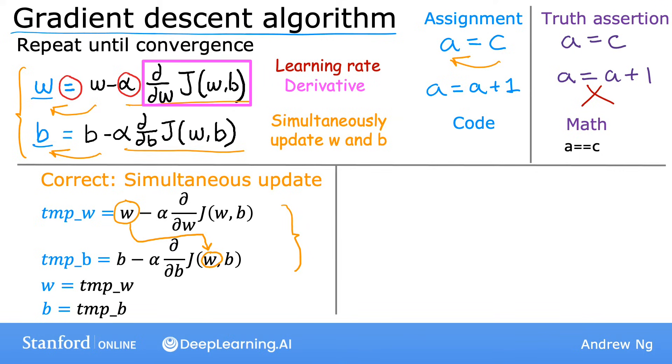In contrast, here's an incorrect implementation of gradient descent that does not do a simultaneous update. In this incorrect implementation, we compute temp_w, same as before. So far, that's okay. And now, here's where things start to differ. We then update w with the value in temp_w before calculating the new value for the other parameter b. Next, we calculate temp_b as b minus that term here. And finally, we update b with the value in temp_b.